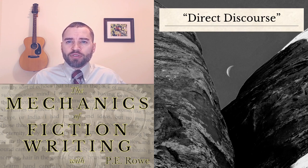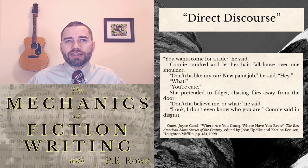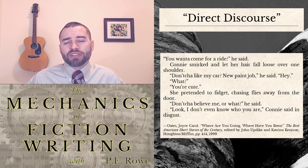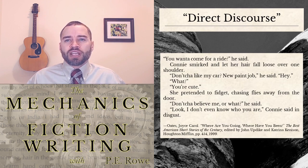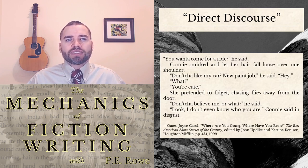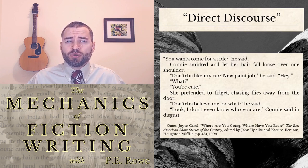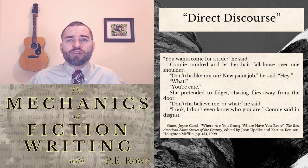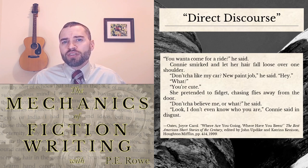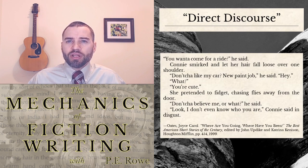You can also notice a few other useful things from just this brief passage that convey information beyond the words in the dialogue itself: 'Wanta come for a ride?' he said. Connie smirked and let her hair fall loose over one shoulder. 'Don'tcha like my car? New paint job,' he said. 'Hey.' Note how the narrator responds to the guy's question with a description of Connie's body language. It's almost as good as a line of dialogue itself. It tells the reader two things: that her body language is dismissive, and that she doesn't really want to talk to this guy — otherwise she'd answer him directly. Oates' narrator does this twice in this brief passage. When he says 'you're cute,' the narrator informs the reader 'she pretended to fidget, chasing flies away from the door.' This means that when the older guy presses Connie for an answer, her negative reaction is plausible and appropriate, and not at all unpredictable.